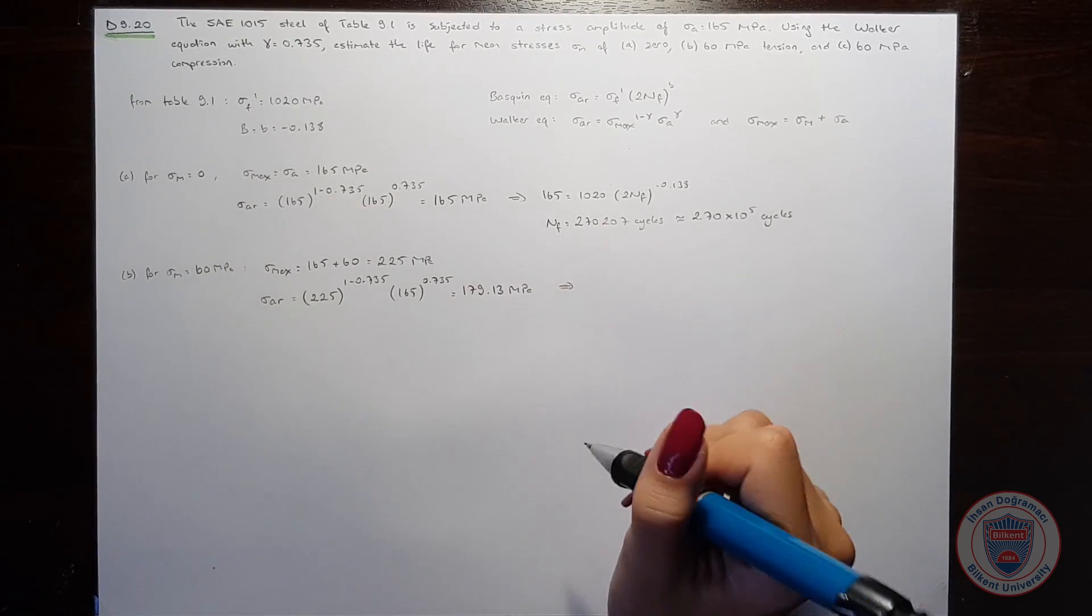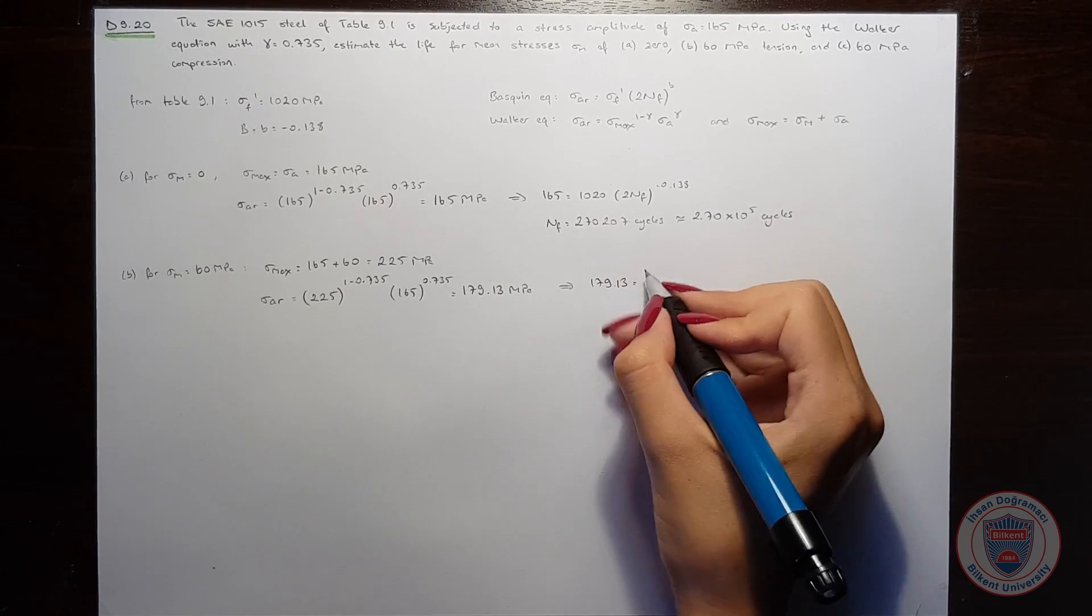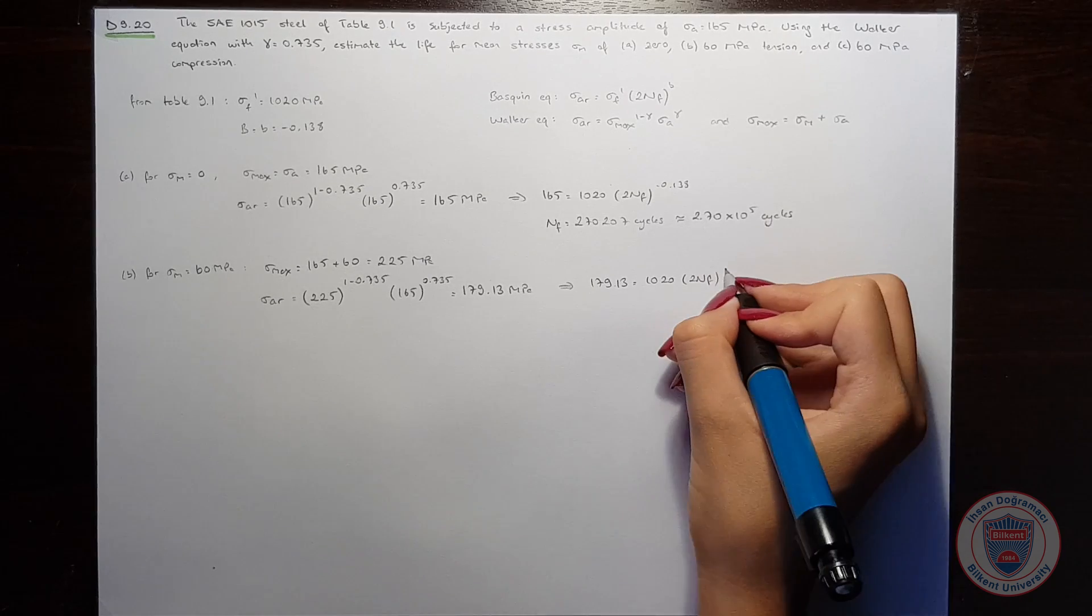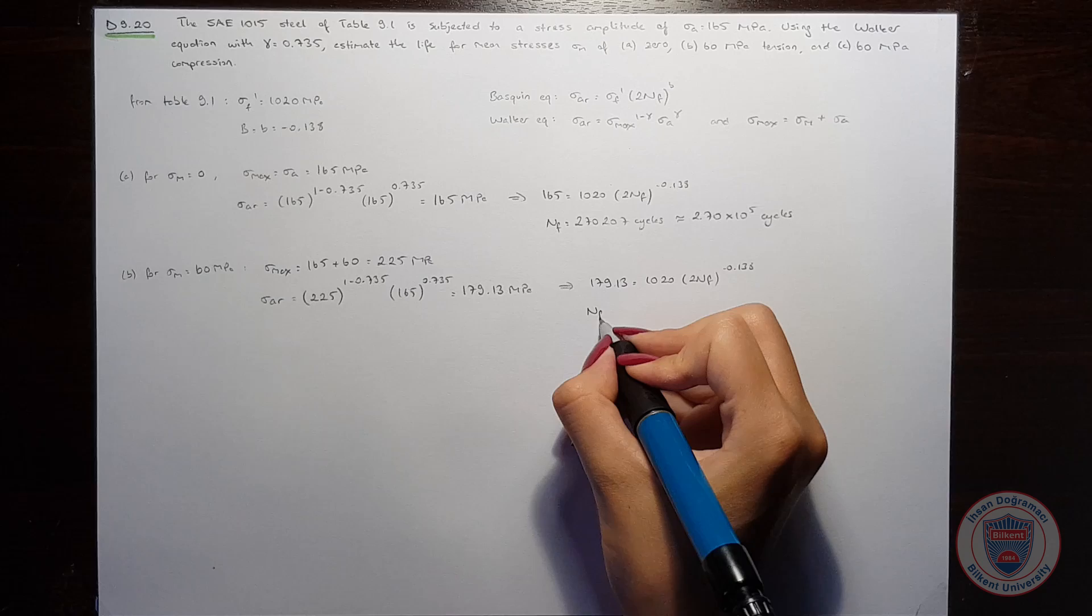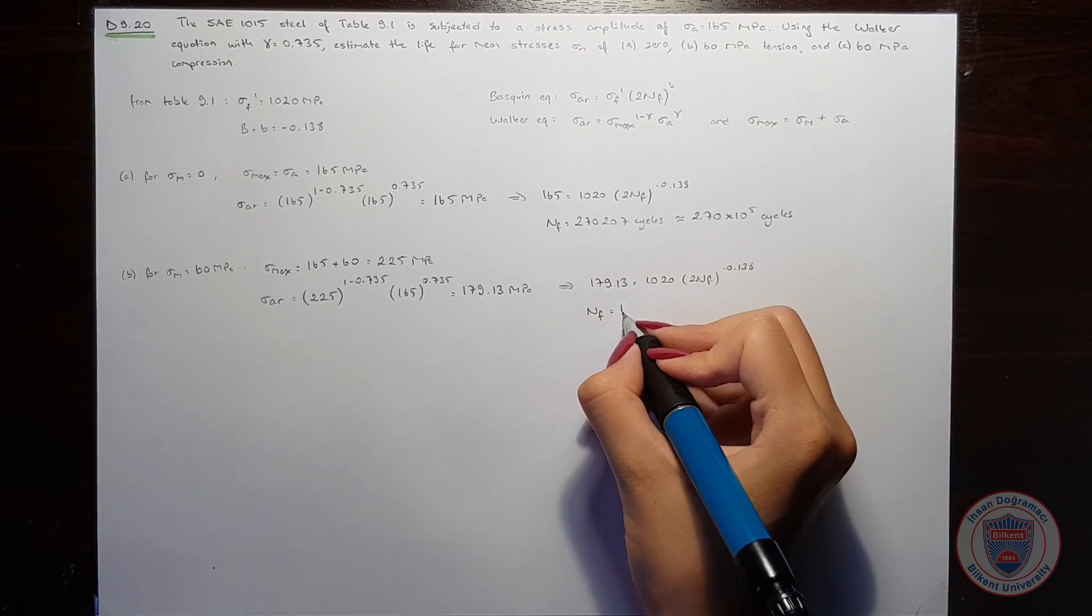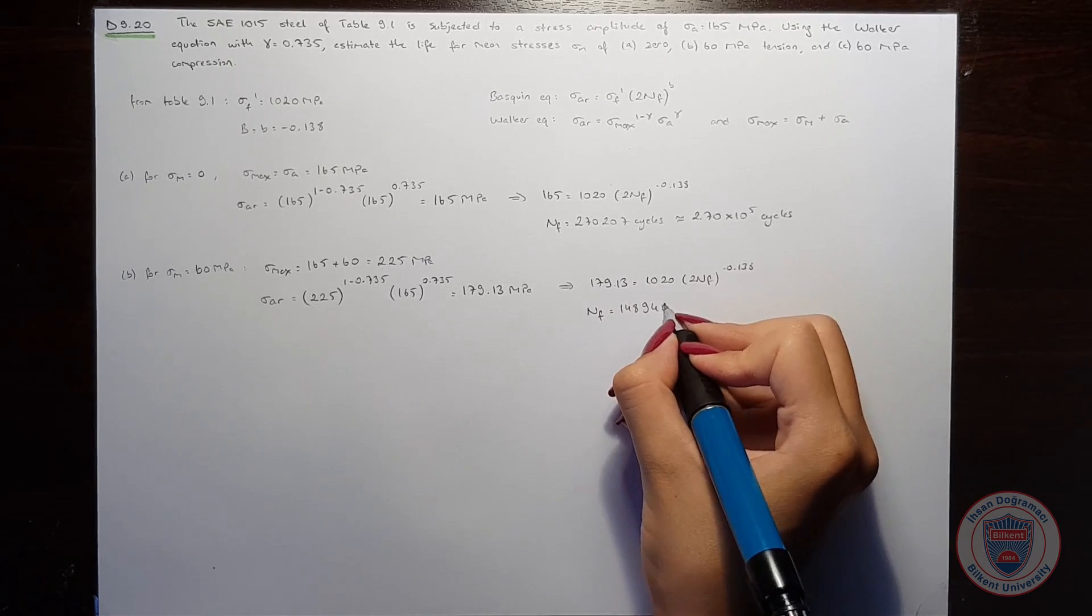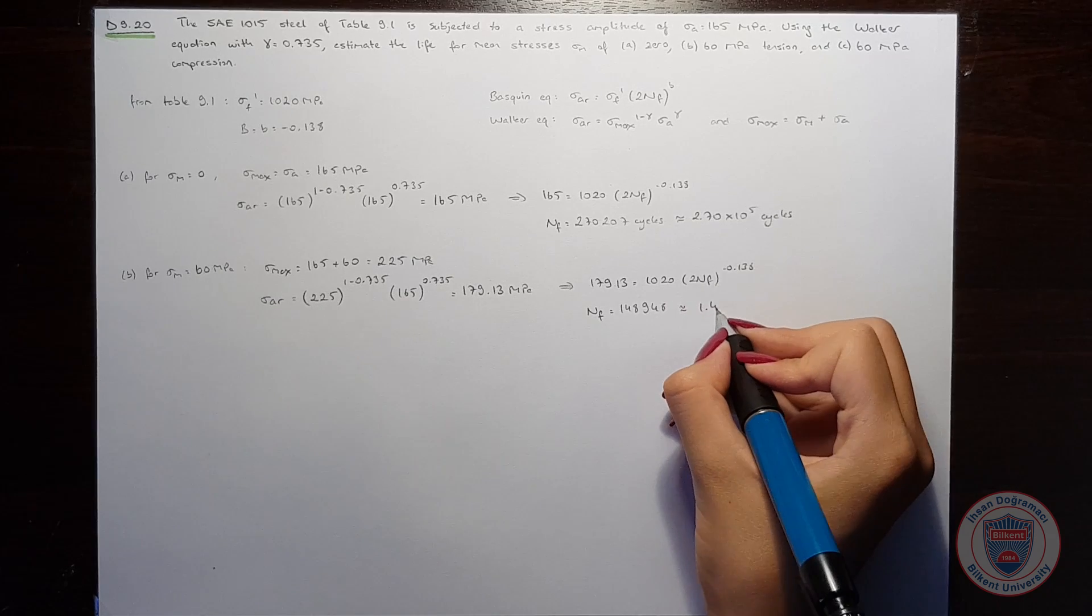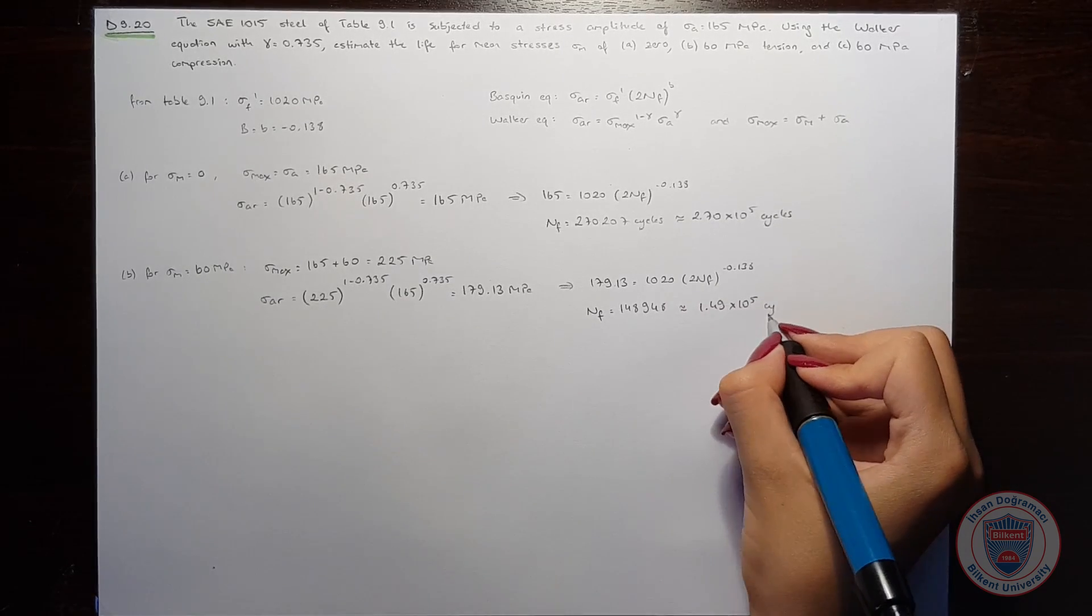Using the Baskin equation, we obtain the number of cycles as 148,948, or approximately 1.49 times 10 to the power of 5 cycles.